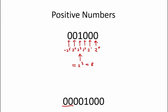For example, the number 8 represented in 8 bits 2's complement is the same as the 6-bit representation but with 2 additional leading 0's. Now let's try a negative number. Negative numbers in 2's complement representation always have a 1 in their most significant bit.